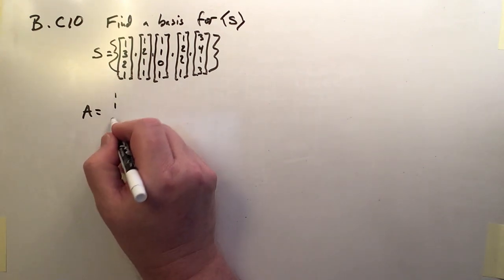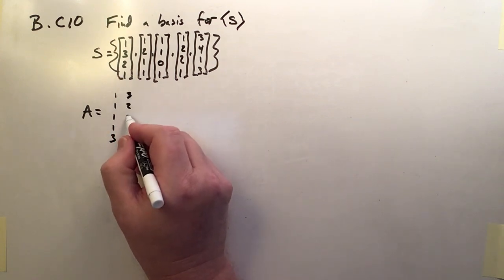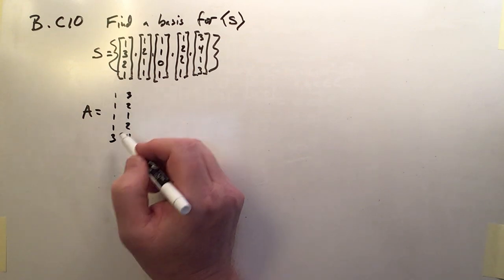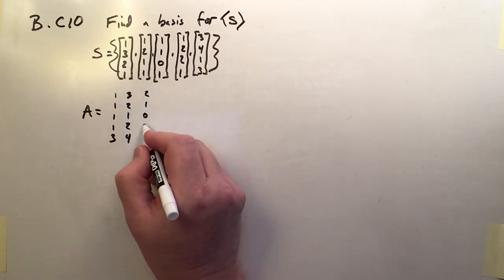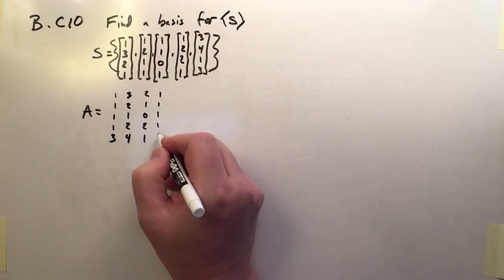So it'll be 1, 1, 1, 1, 3 as the first row. 3, 2, 1, 2, 4 is the second or second column. The third column is going to be 2, 1, 0, 2, 1, and the last one's going to be 1, 1, 1, 1, 3.